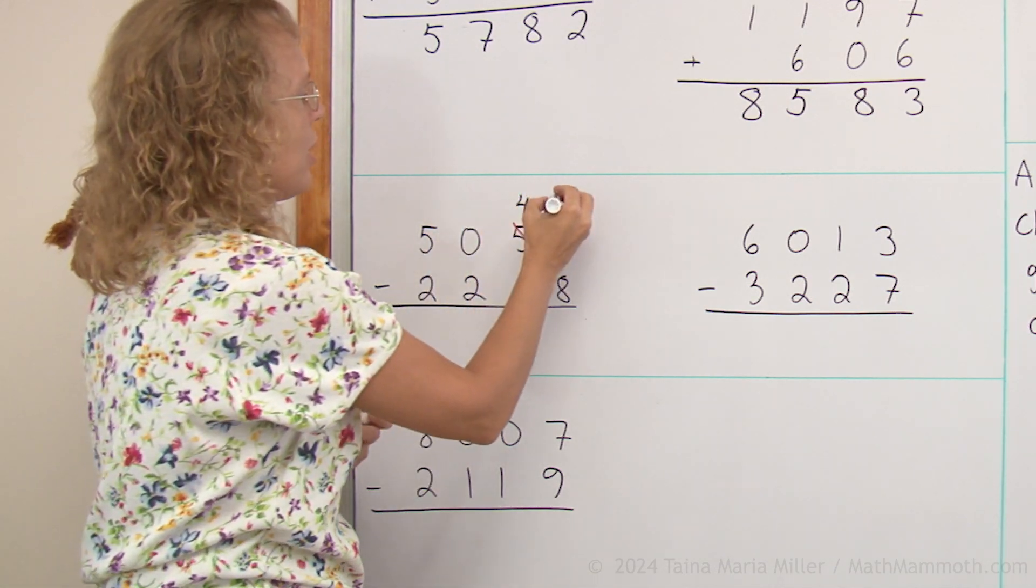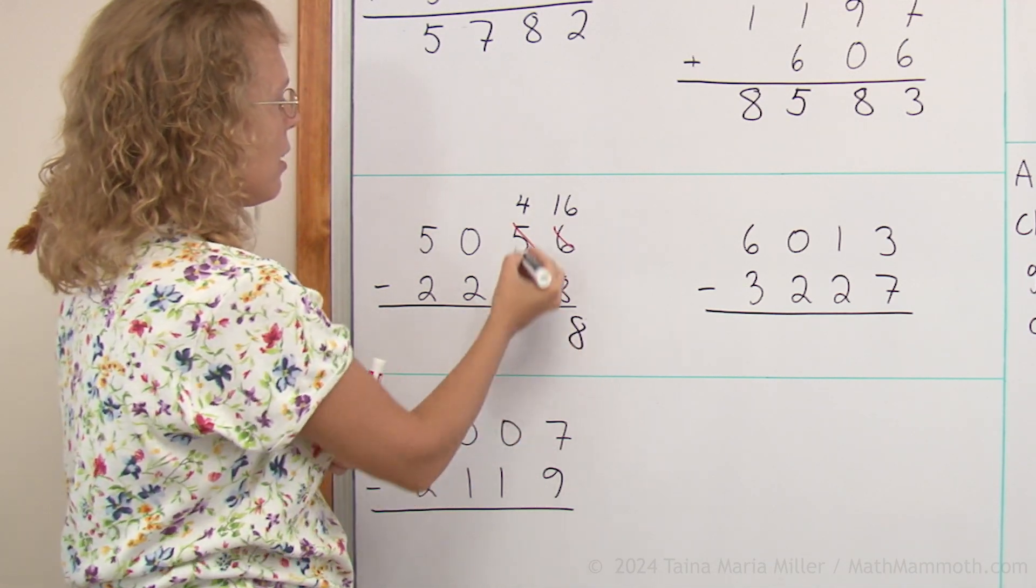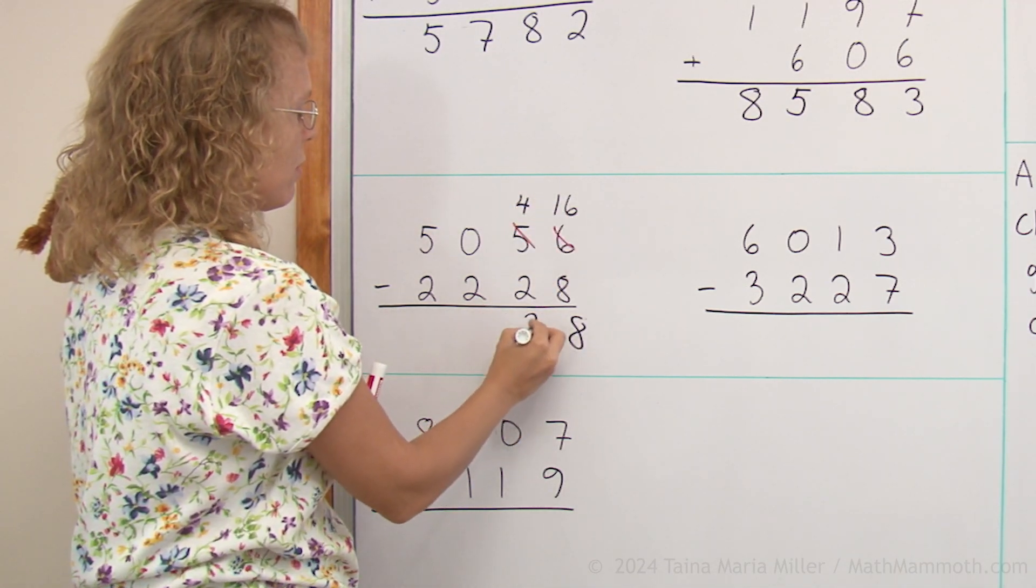And then in the ones, you remember how this is done, we have now 16. Sixteen minus eight is eight. Four minus two is two.